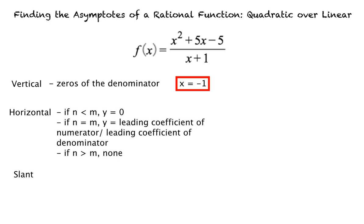If n is less than m, the horizontal asymptote is y equals 0. If n equals m, it's y equals the leading coefficient of the numerator over the leading coefficient of the denominator. If n is greater than m, there is no horizontal asymptote.